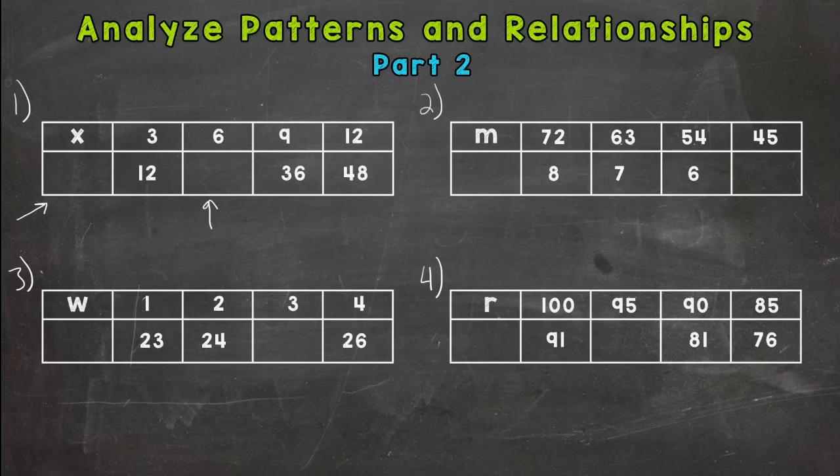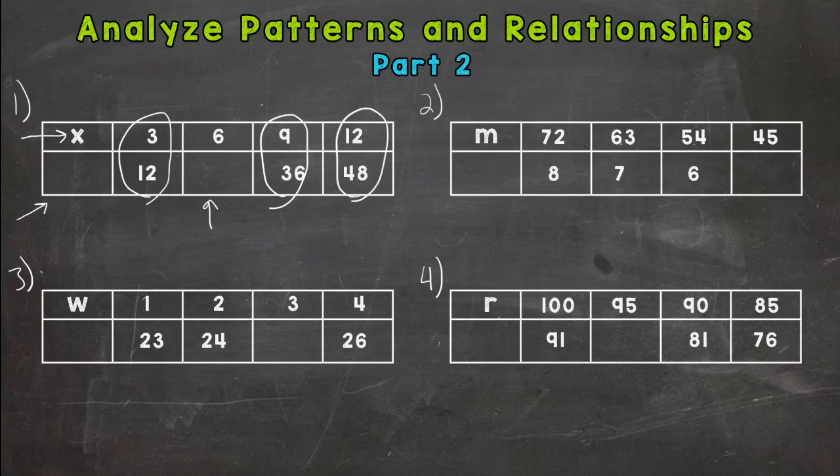So along the top right here, we have 3, 6, 9, 12. So counting up by 3's. Let's check for our relationship between corresponding terms. Remember, corresponding terms are the matching pairs between the two patterns, basically, the partners. So 3 and 12, 9 and 36, 12 and 48. And then once we find the relationship, that can help us find the missing piece that goes right there.